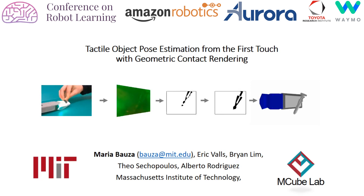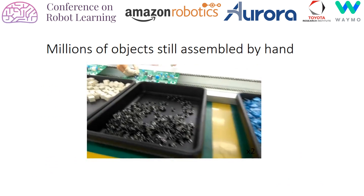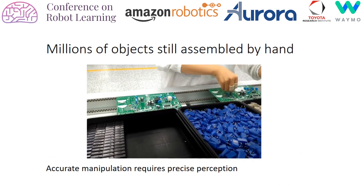Daily, millions of humans assemble objects by hand, even when those are rigid and well-known. If we want robots to achieve the same dexterity, we must provide them with accurate perception.